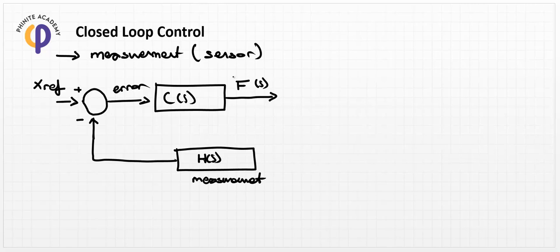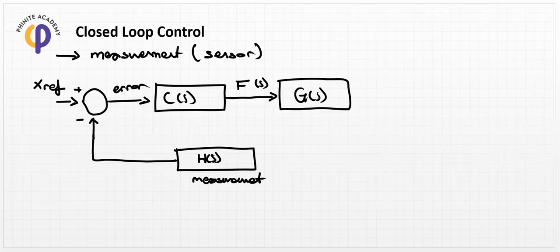The control loop C_s creates a force, flow rate Q, or voltage value applied to the system. The plant can be a hydraulic system or a mechanical one, such as f = m·ẍ, and this plant gives us the position output.